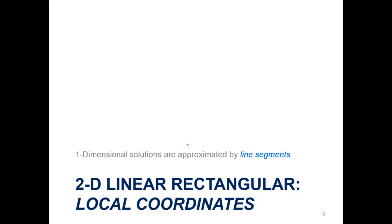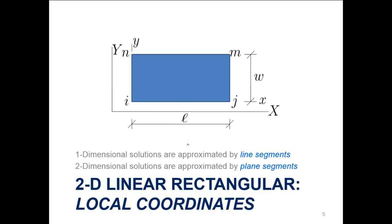For 2D linear rectangular elements, we'll work in local coordinates first. One-dimensional solutions are approximated by line segments — that's what we've already done. Two-dimensional solutions are approximated by plane segments. Here we have a plane with an overall length and width, with nodes i, j, m, and n in a local coordinate system of x and y. Previously for a linear element we had just i and j, but now we have four nodes because it's a plane element.